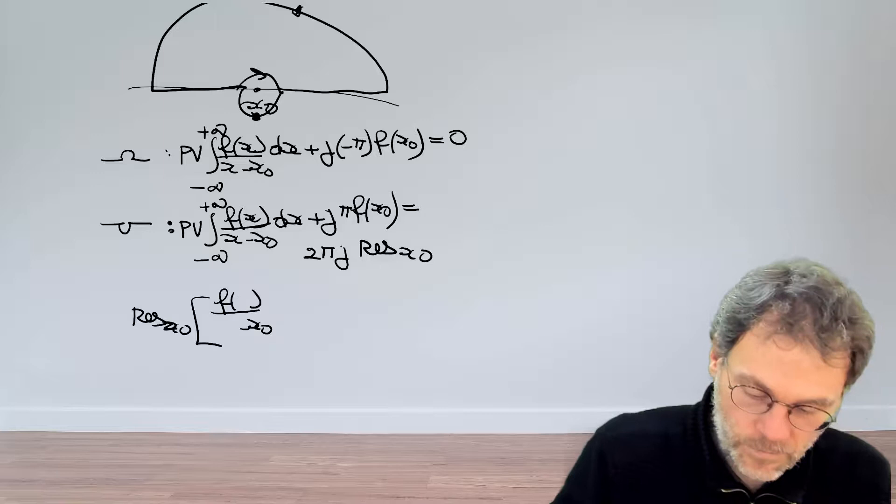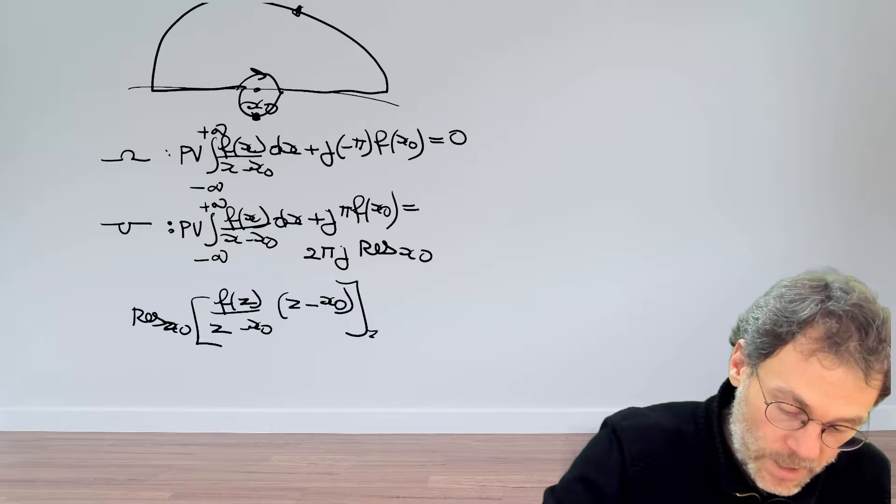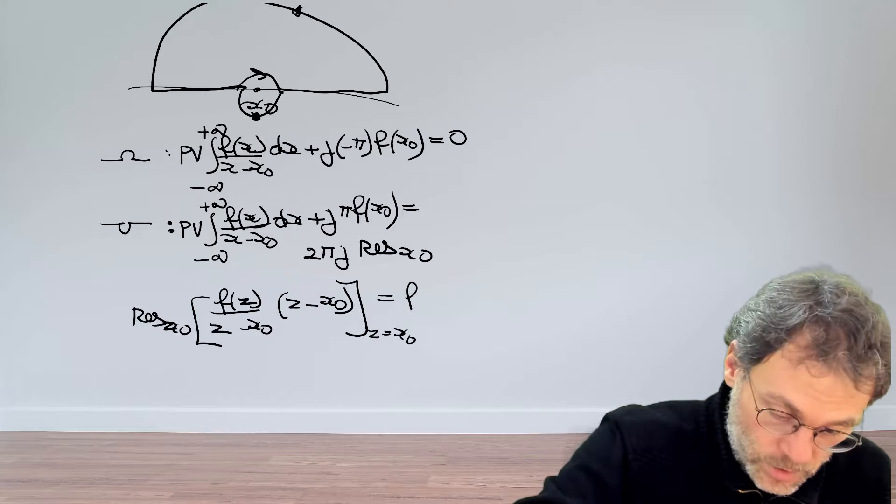We multiply, let's not forget, by z minus the point where we look at the singularity, and we evaluate that whole thing at the singularity. That's just going to reduce to f of x0.